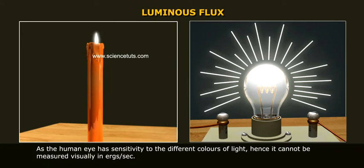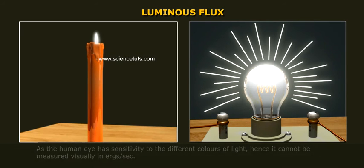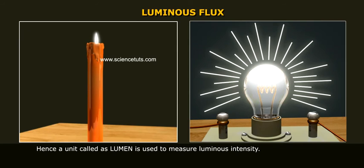As a human eye has sensitivity to the different colors of light, hence, it cannot be measured visually in ergs per second. Hence, a unit called as lumen is used to measure luminous intensity.